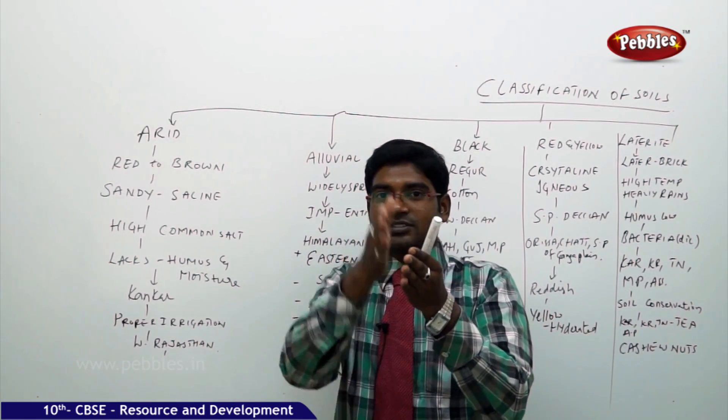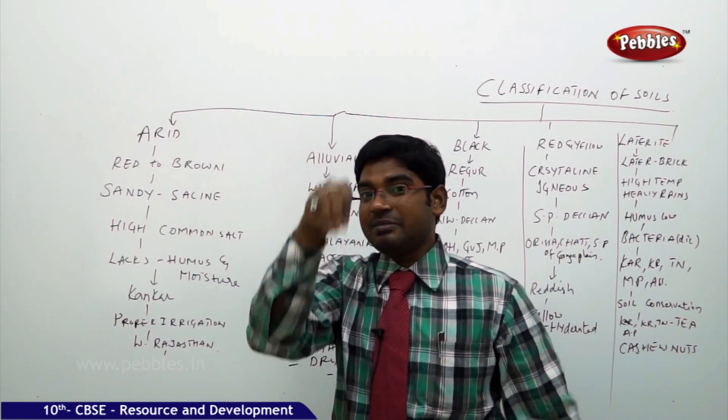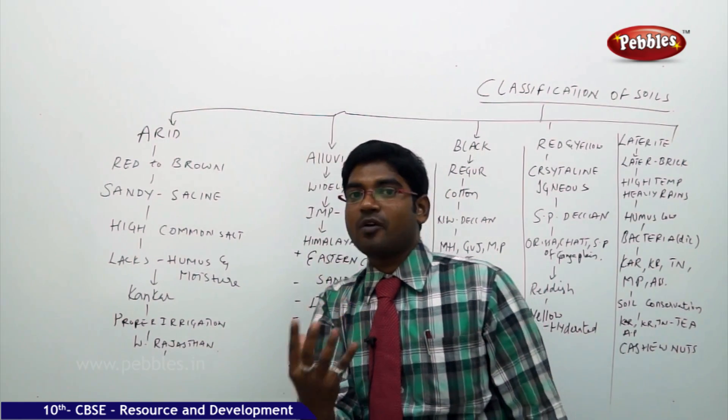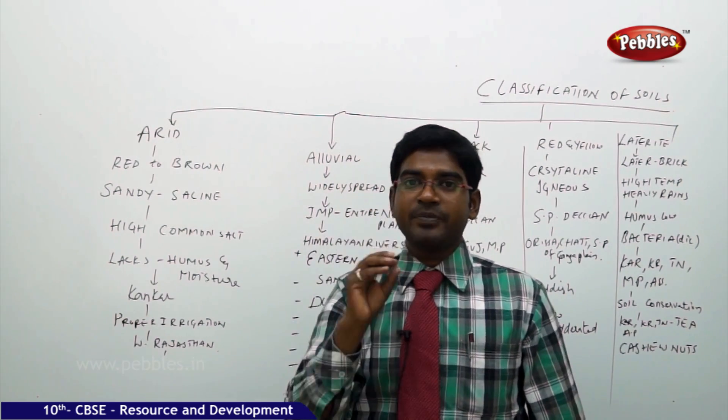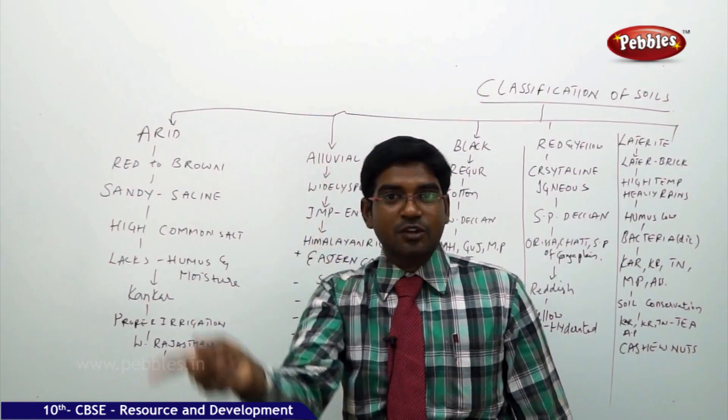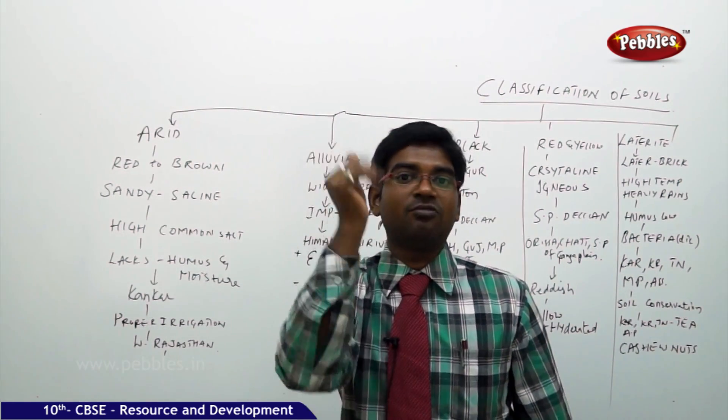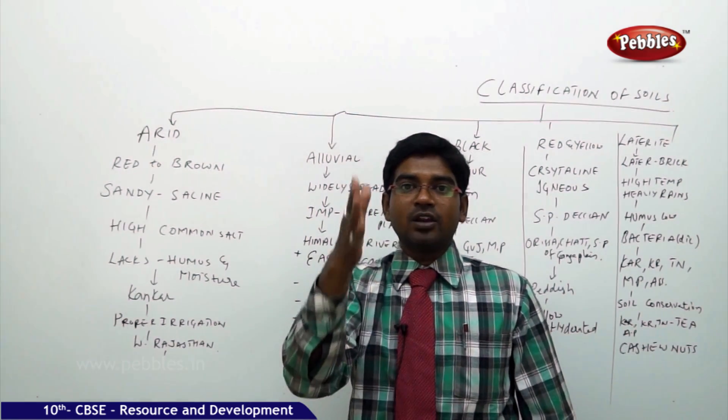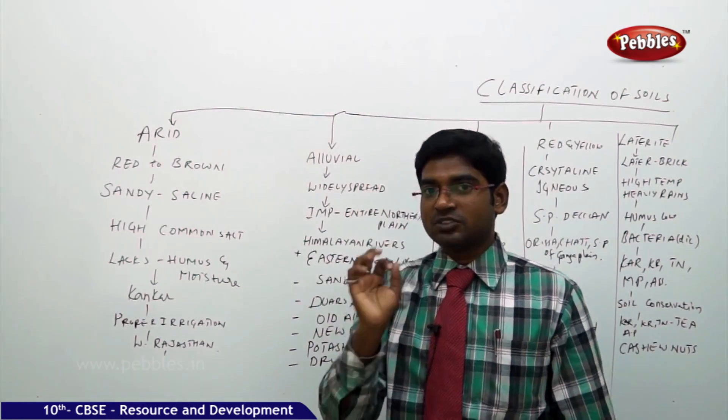These lands can be brought into cultivatable lands by providing proper irrigation methods to that one, giving a proper treatment to the soil by adding certain chemicals which are reactive to the existing chemicals there and turning them by regular supply of water. You can bring that one into regular cultivatable land. That are the features of arid soils.